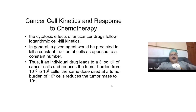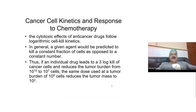The reverse happens in chemotherapy. When you give chemotherapy, it kills a certain number of cells every time it is given, and that cell kill is a logarithmic cell kill. This means that if a drug kills 3 logs of cancer cells each time it is given, and you start with 10^10 cells, then at the end of the first cycle you will have 10^7 cells, and after the second cycle you will have 10^4 cells. This is called logarithmic cell kill kinetics.